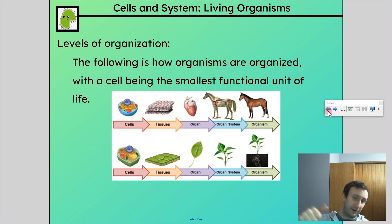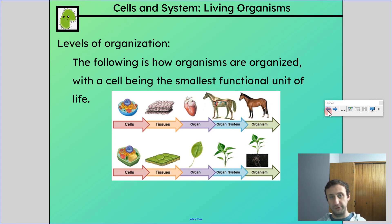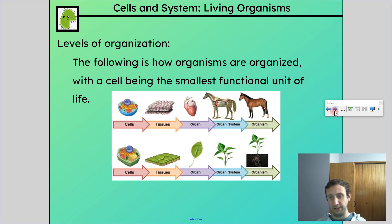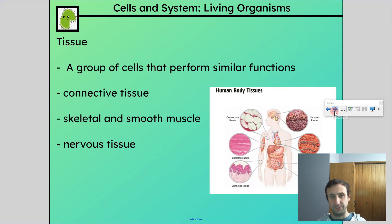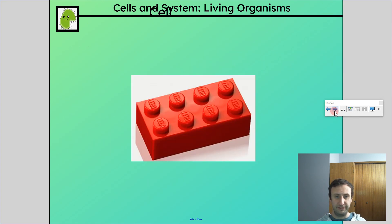It's important to know this order from smallest to largest — you straight up have to memorize it. It goes: cell, tissue, organ, system, organism. That's something you have to memorize and know — it's guaranteed to be on quizzes and tests.